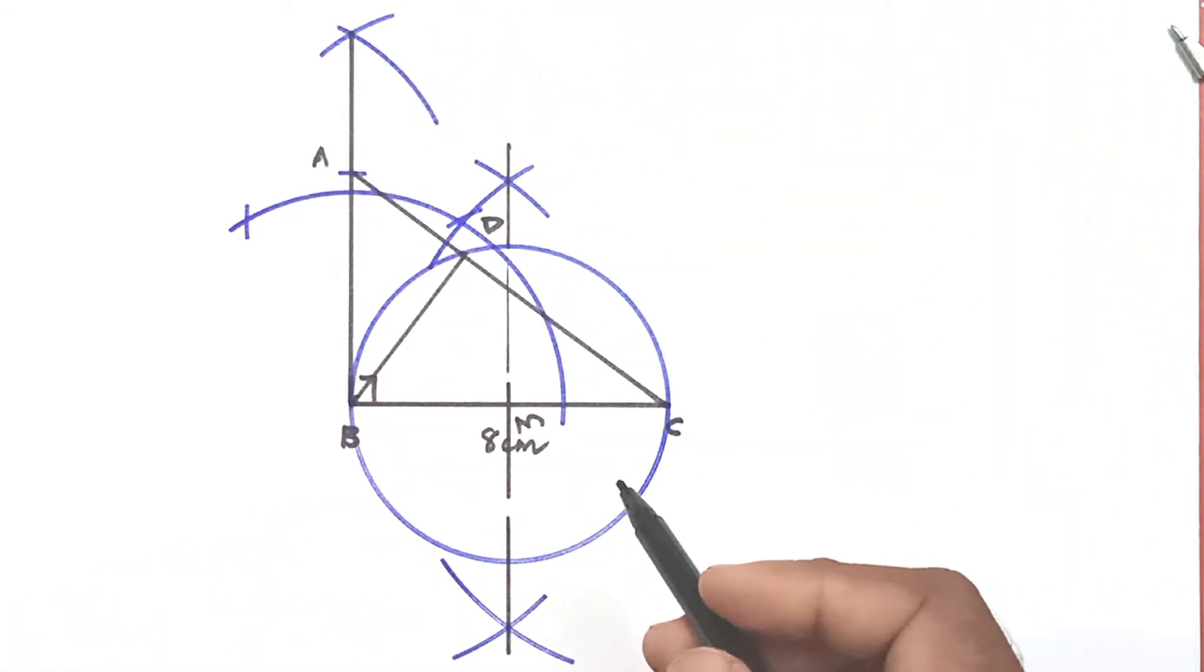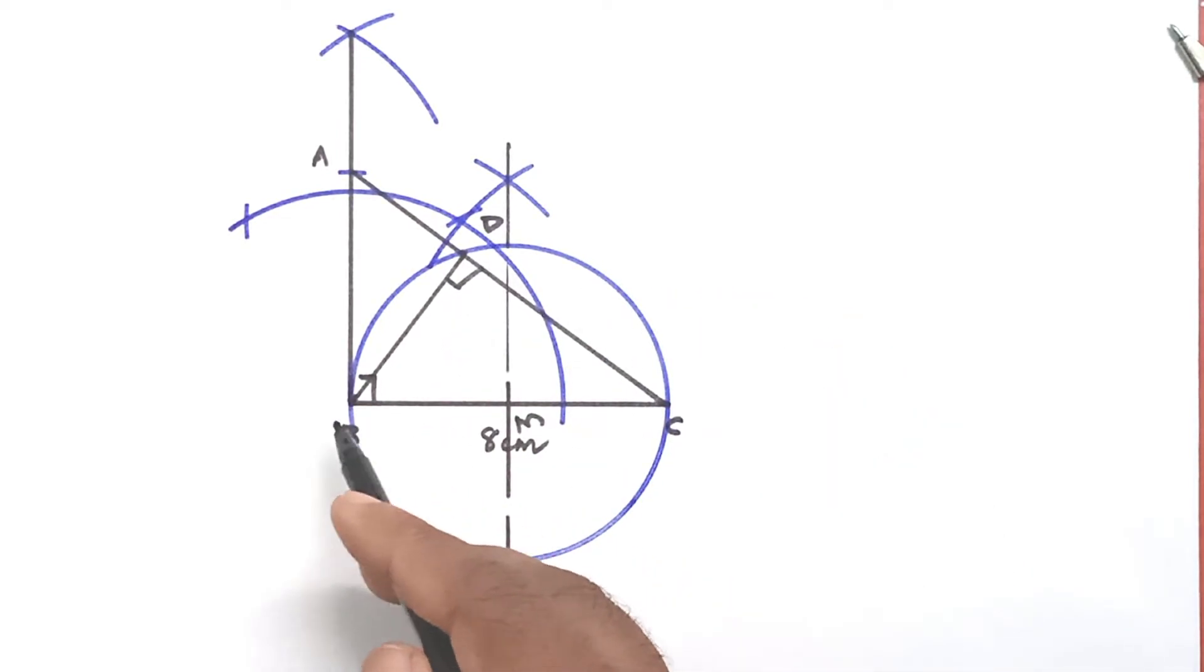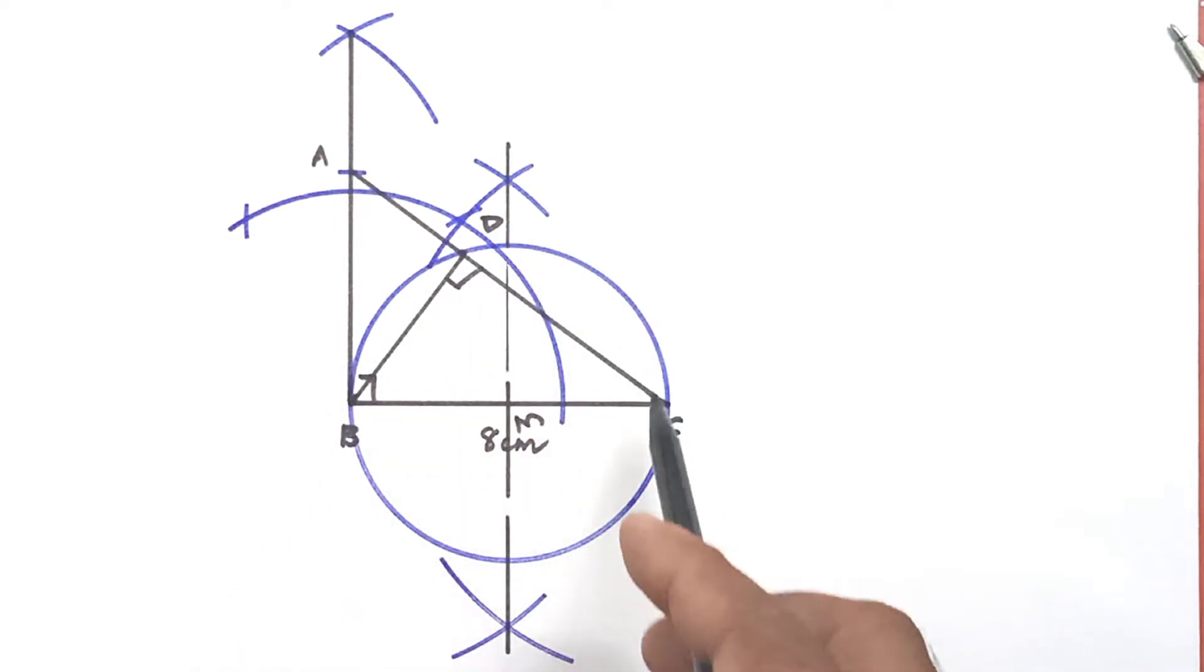BD is perpendicular to AC because BDC is the angle subtended by the diameter BC. That is, angle in a semicircle. So angle BDC is equal to 90 degrees, that is, BD perpendicular to AC.